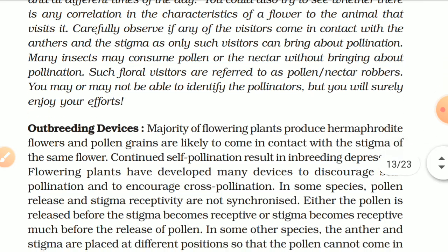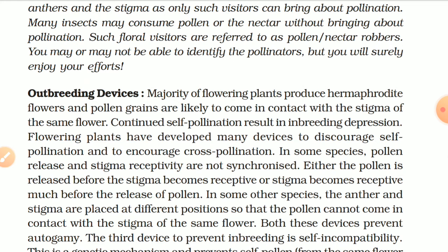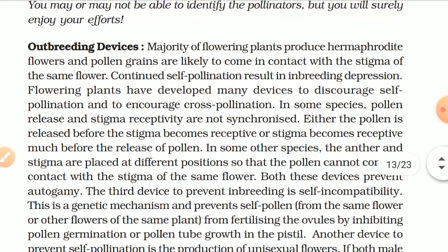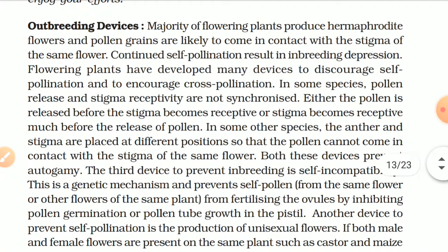The majority of flowering plants produce hermaphrodite flowers, and pollen grains are likely to come in contact with the stigma of the same flower. Continued self-pollination results in inbreeding depression. Flowering plants have developed many devices to discourage self-pollination and encourage cross-pollination. In some species, pollen release and stigma receptivity are not synchronized — either the pollen is released before the stigma becomes receptive, or the stigma becomes receptive much before the release of pollen. In some other species, the anther and stigma are placed at different positions so that pollen cannot come in contact with the stigma of the same flower. Both these devices prevent autogamy.